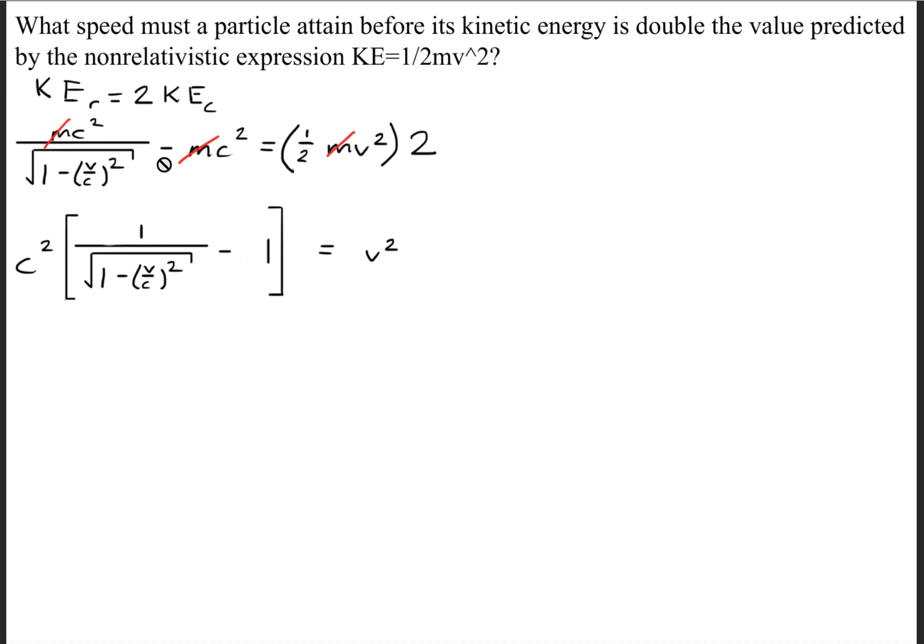We'll multiply this 2 out. We'll cancel the masses on both sides of the equation. We'll factor out this c squared so that we're left with the speed of light squared times 1 over the square root of 1 minus v over c squared minus 1. And we set that equal to v squared.